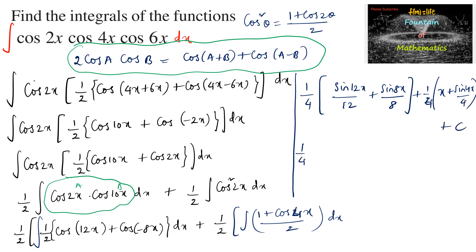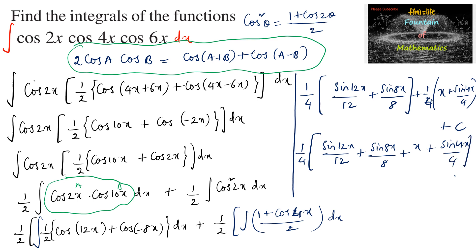Taking 1/4 as a common factor, the final answer is (1/4)[sin(12x)/12 + sin(8x)/8] + (1/4)[x + sin(4x)/4] + C.